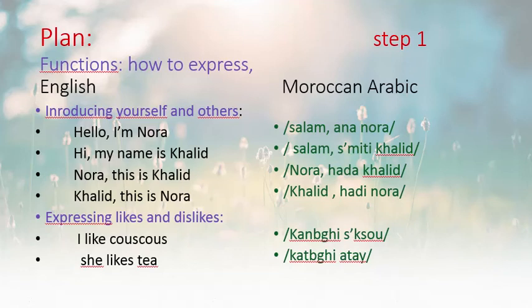'Noura, this is Khalid' → 'Noura, Hada Khalid.' So 'Hada' means 'this is.' 'Khalid, this is Noura' → 'Khalid, Hadi Noura.' So 'Hadi' also means 'this is.' Note the difference between 'Hada' and 'Hadi': 'Hada' is for masculine and 'Hadi' is for feminine.